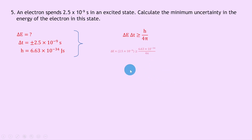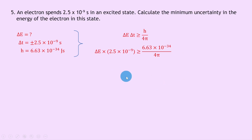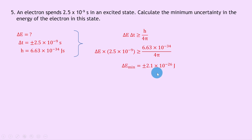Substituting in the numbers gives delta E times 2.5 times 10 to the minus 9 is greater than or equal to 6.63 times 10 to the minus 34 divided by 4 pi. Dividing both sides by 2.5 times 10 to the minus 9 and taking the equals part for the minimum uncertainty, delta E min equals plus or minus 2.1 times 10 to the minus 26 joules.